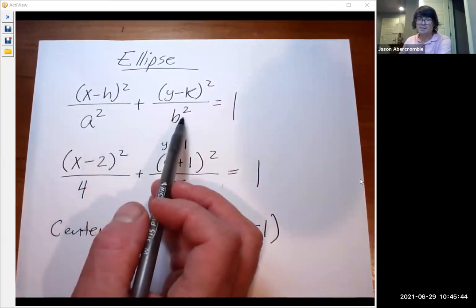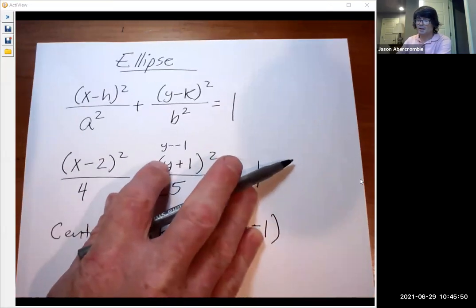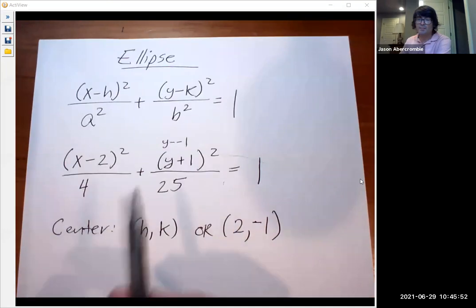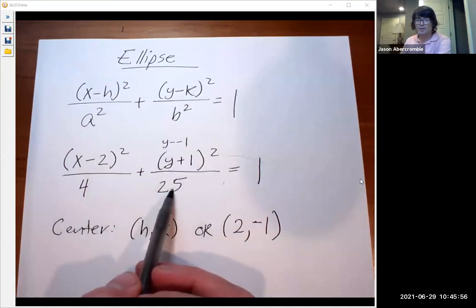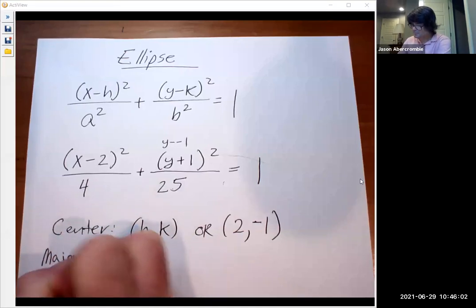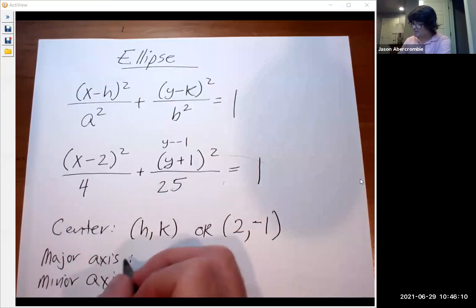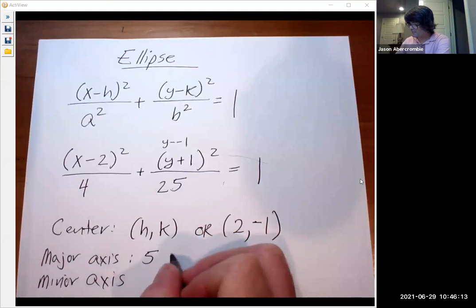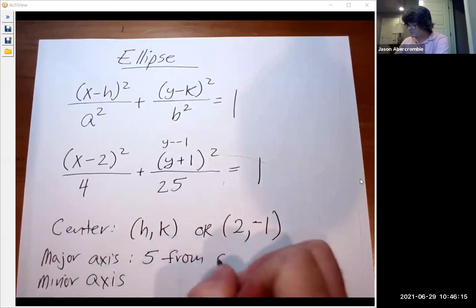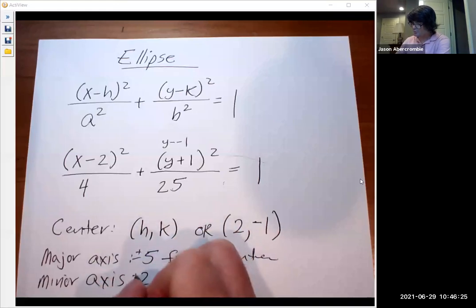This a squared and b squared tells you how far it is from the center to your major axis and your minor axis. And it doesn't matter which one's which. The major axis is going to be the bigger number, and the minor axis is going to be the lower one. The major axis is five from center in each direction. And then the minor axis goes plus and minus two from center.